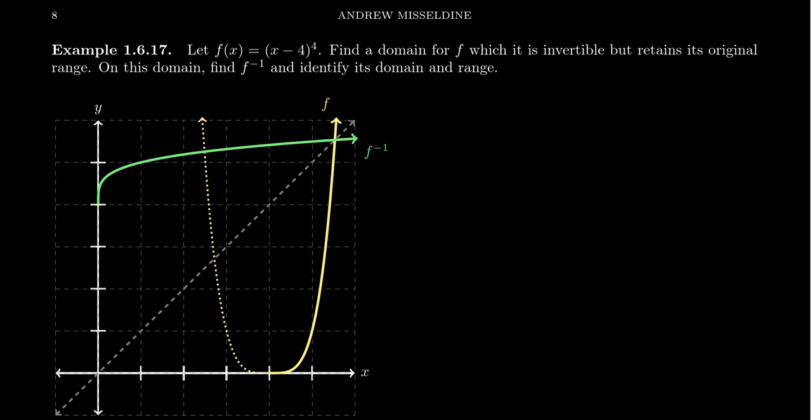So let's find the domain of this function for which the function then becomes invertible, that it has an inverse, but we retain the original range. This is an issue we saw earlier when we talked about the function y equals x squared. y equals x squared is not 1 to 1, so it doesn't have an inverse function. It's not invertible.